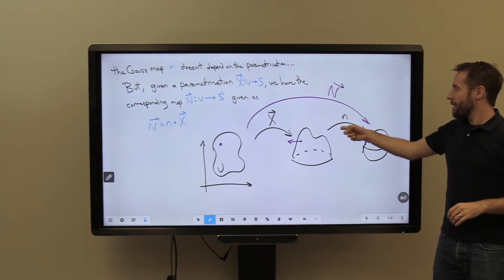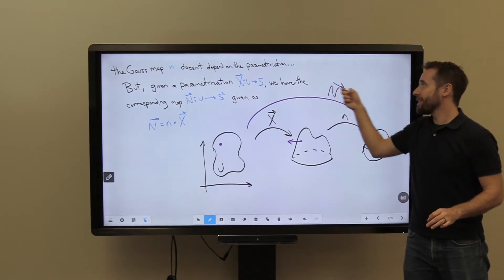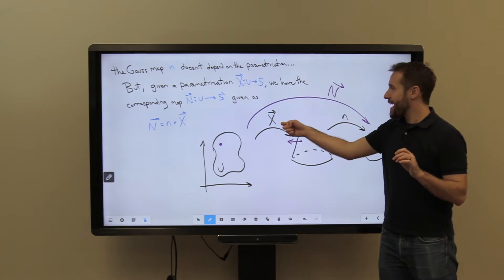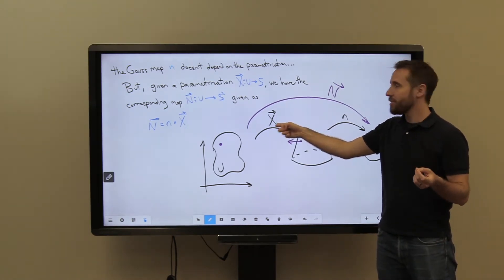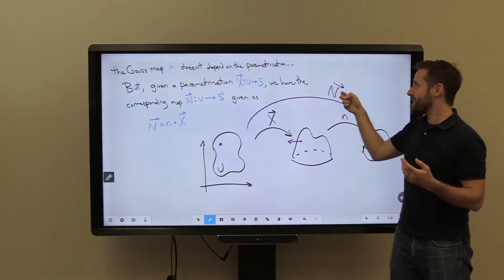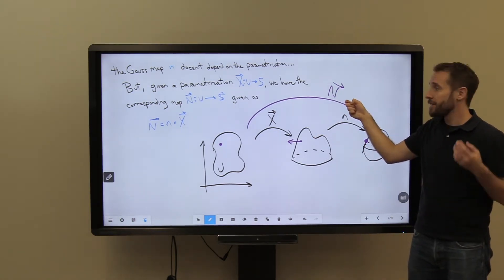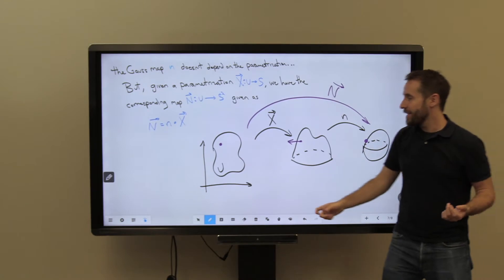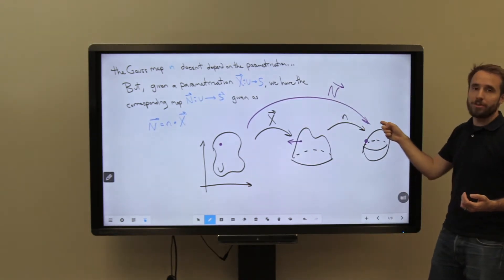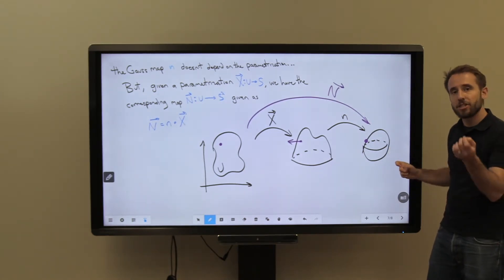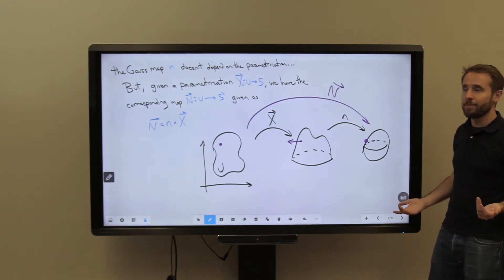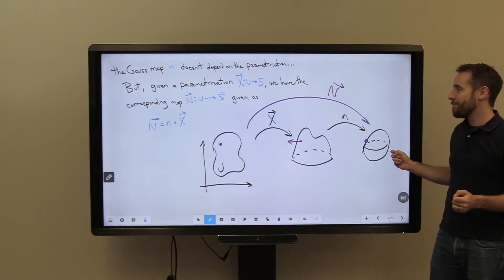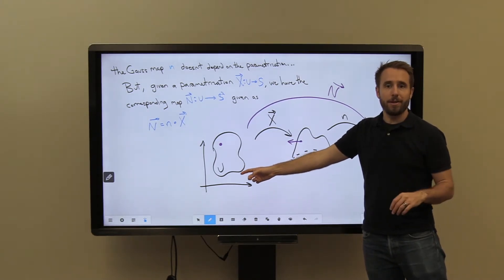We have our lowercase n — the Gauss map — and the corresponding capital N for any given parameterization. Just as capital X describes a parameterization of a parameterized surface, so does N describe a parameterization — specifically a parameterization of the unit sphere — because it's sending a coordinate system onto this surface in three-dimensional space, which just happens to be the unit sphere. So N gives us a way to understand the Gauss map through the given parameterization.